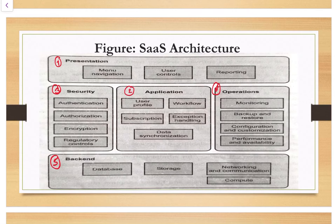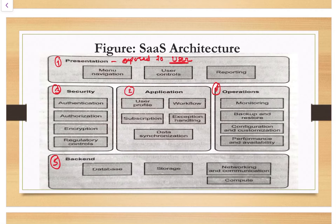The presentation layer contains the capabilities that are exposed to the user. User interaction is possible via menu navigation, user controls, and reporting. This layer monitors reports and user controls — this is how the presentation layer works.